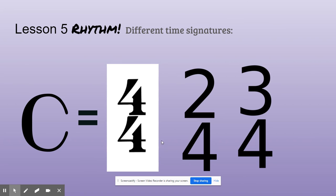In common, they all have a 4 on the bottom. And that means that the quarter note is going to get the beat. They all have the 4 on the bottom. That means the quarter note is going to get the beat.